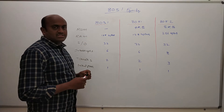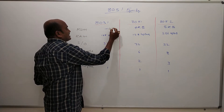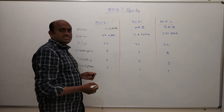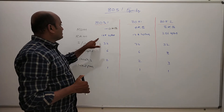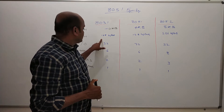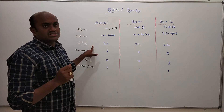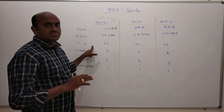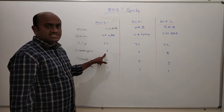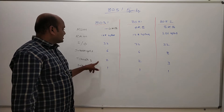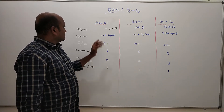The ROM memory of 8031 is 0KB — there is no ROM memory. RAM memory is 128 bytes. IO devices are 32, meaning 32 input/output pins are available. Interrupt sources are 6, timers are 2, and the serial port is 1.